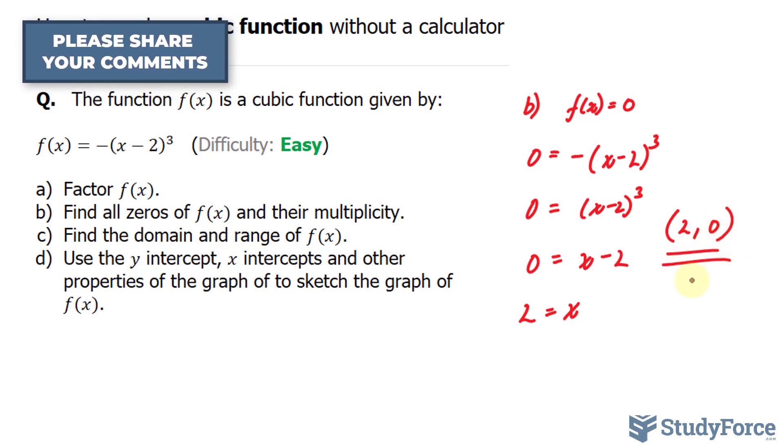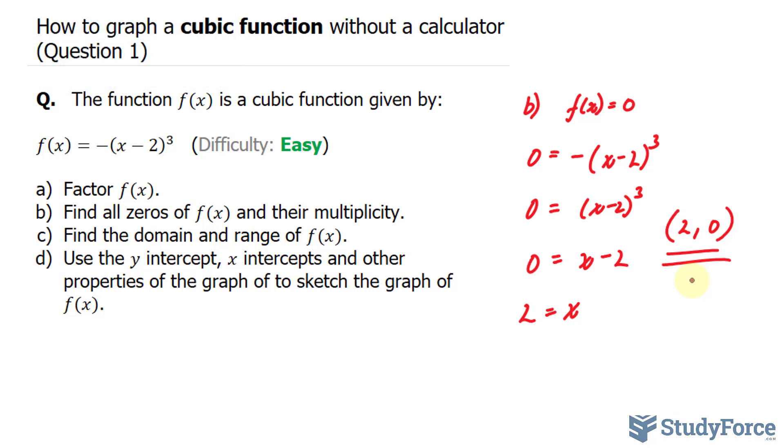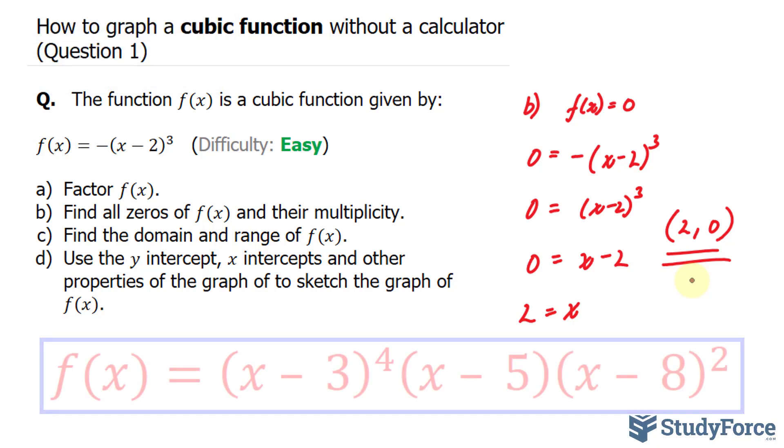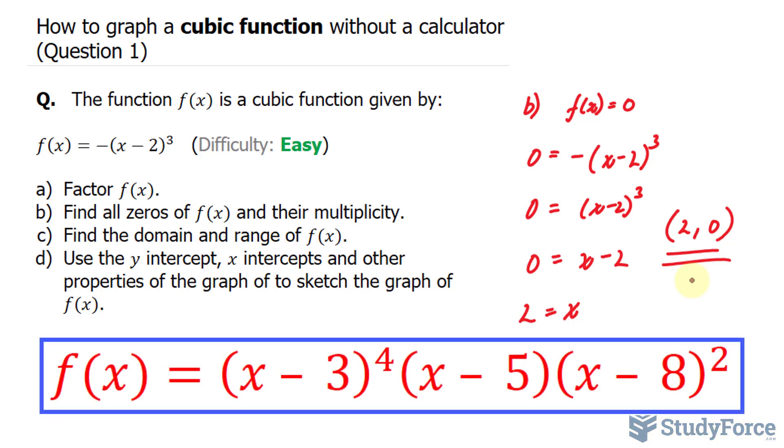They also ask for the multiplicity. Multiplicity means how many times a particular number is a zero for a given polynomial. For example, in the polynomial shown on your screen, the zero 3 has a multiplicity of 4, 5 has a multiplicity of 1, and 8 has a multiplicity of 2. Although this polynomial has only three zeros, we say that it has seven zeros counting multiplicity.